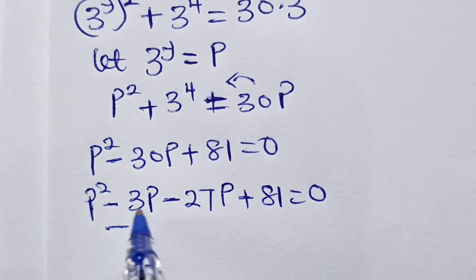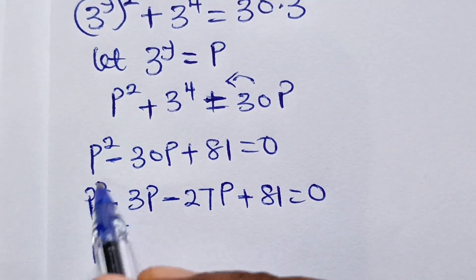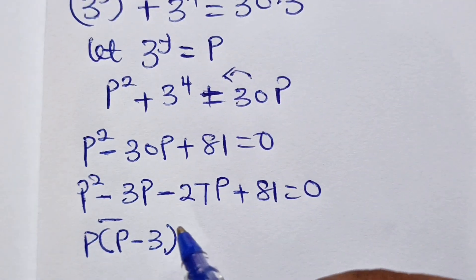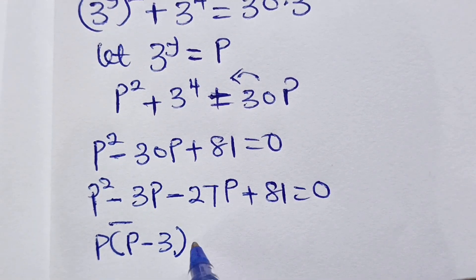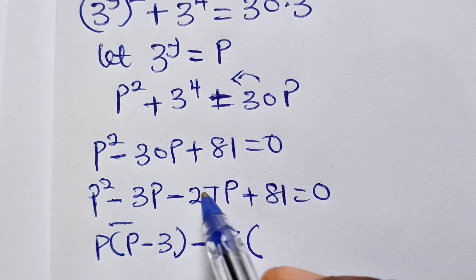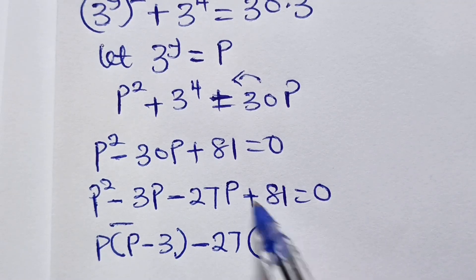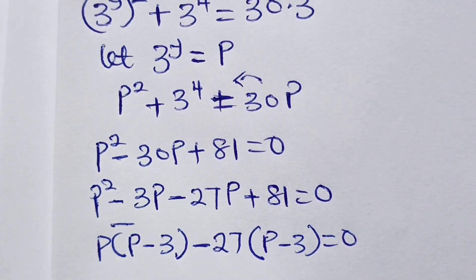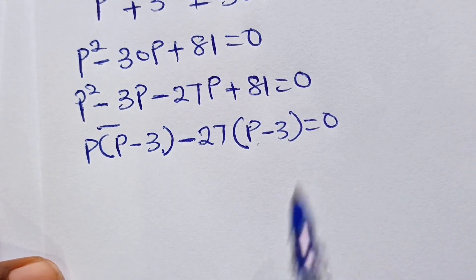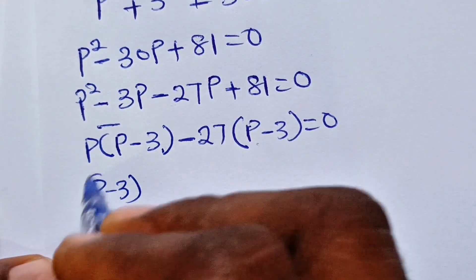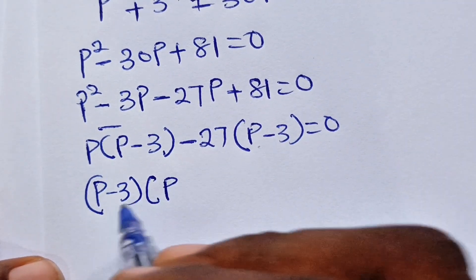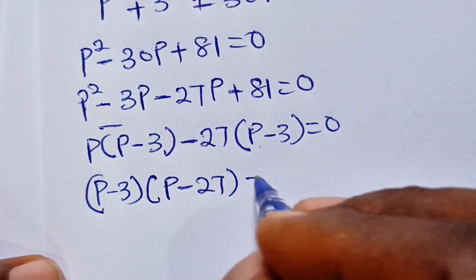Grouping the terms: p(p − 3) − 27(p − 3) = 0, which factorizes as (p − 3)(p − 27) = 0. Since if a·b = 0 then either a = 0 or b = 0, we get p − 3 = 0 or p − 27 = 0, giving p = 3 or p = 27.